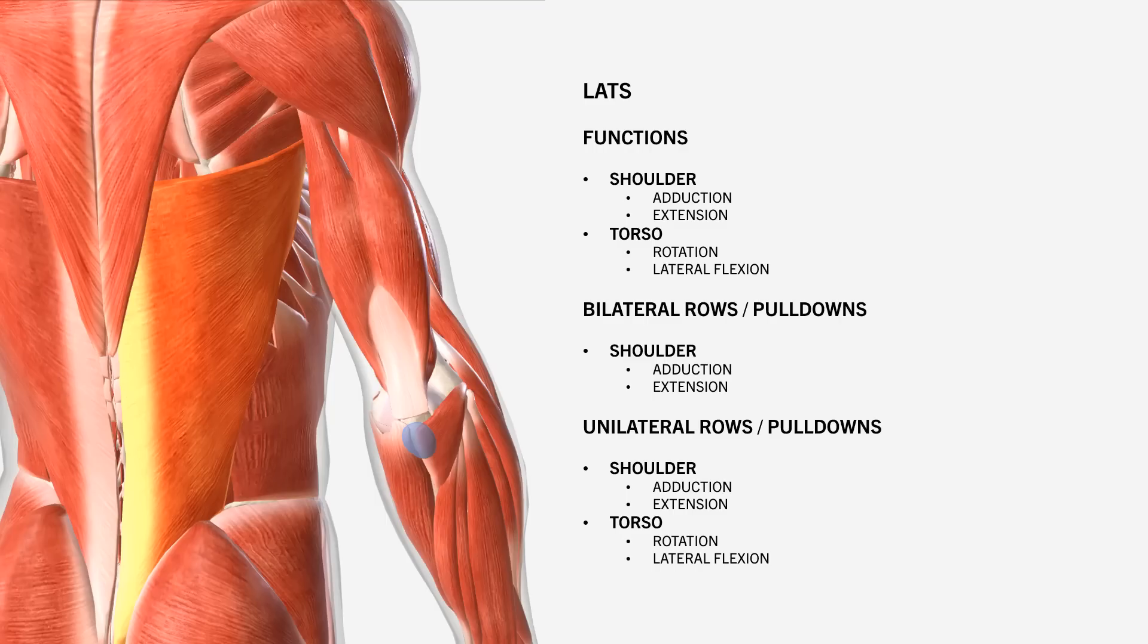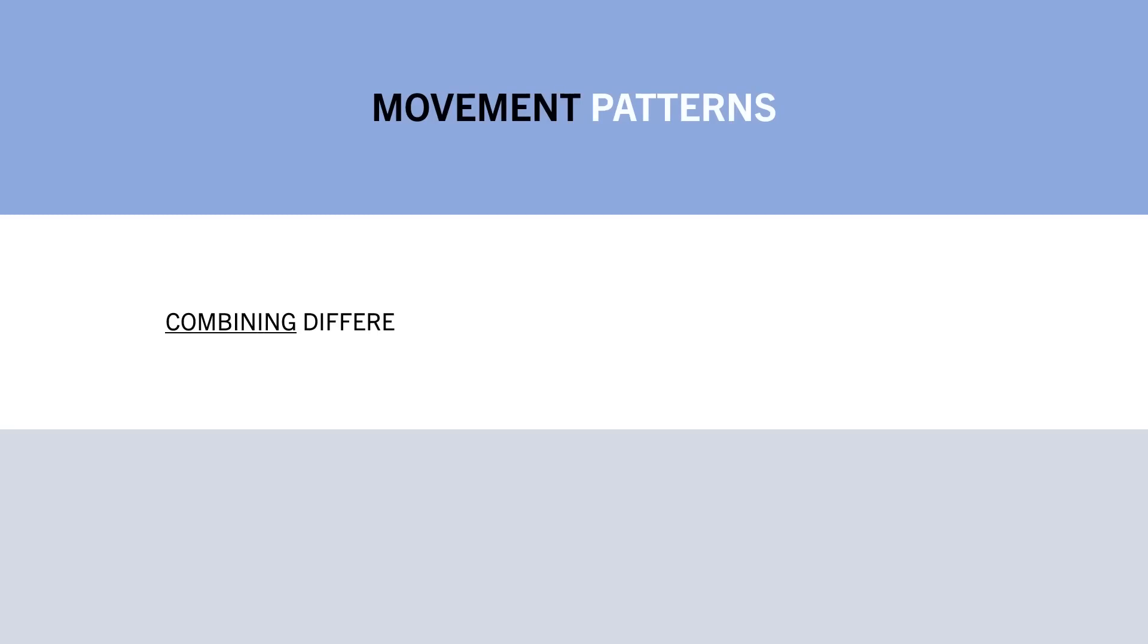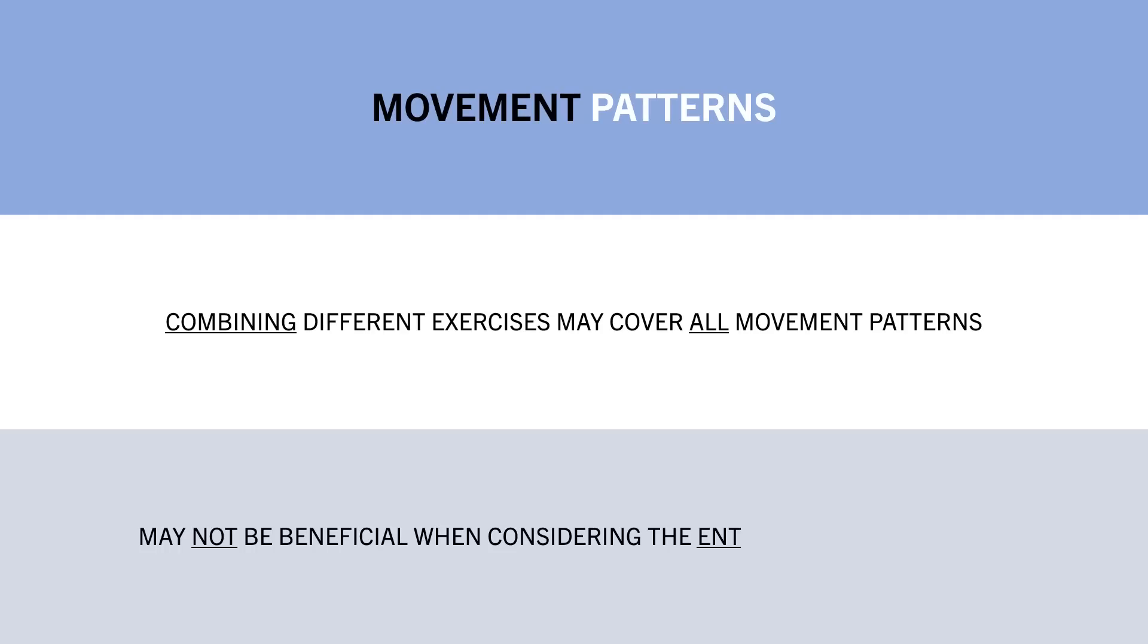Whereas unilateral rows and pull downs will still allow shoulder adduction and extension but will also usually allow some torso rotation and lateral flexion which may provide a greater stimulus for the lats. However the counter argument that can be made here is that we normally perform multiple exercises for a muscle throughout the week, so when you combine different exercises you are likely to train that muscle via all of its intended motions anyway. So in the context of the entire training plan this hypothetical benefit may be redundant anyway.